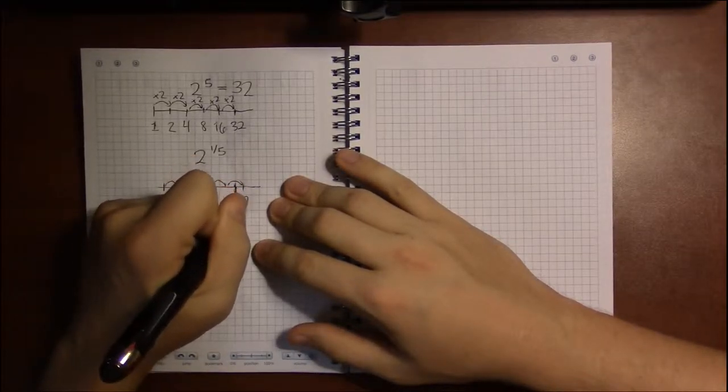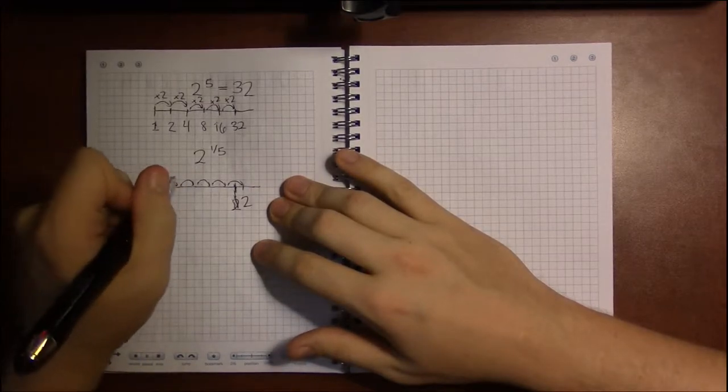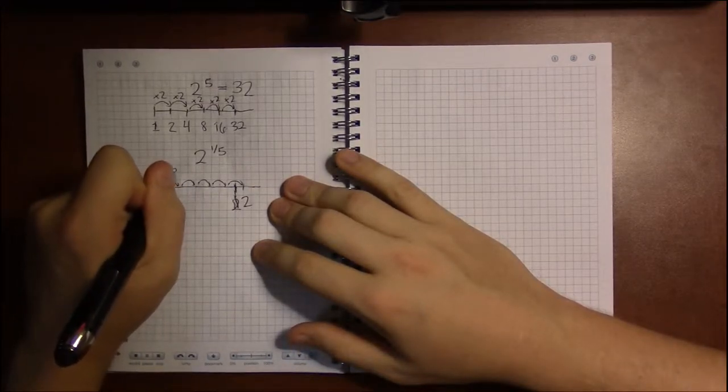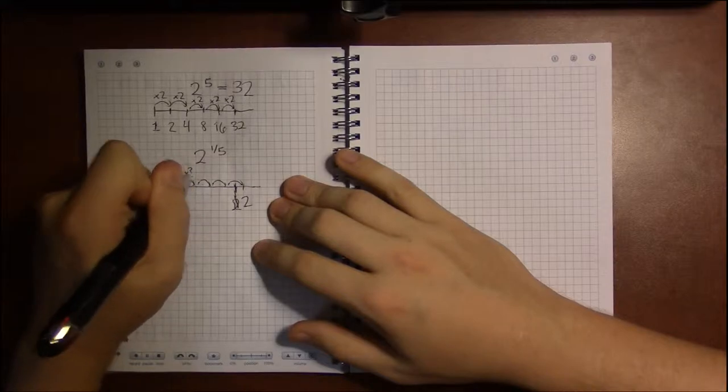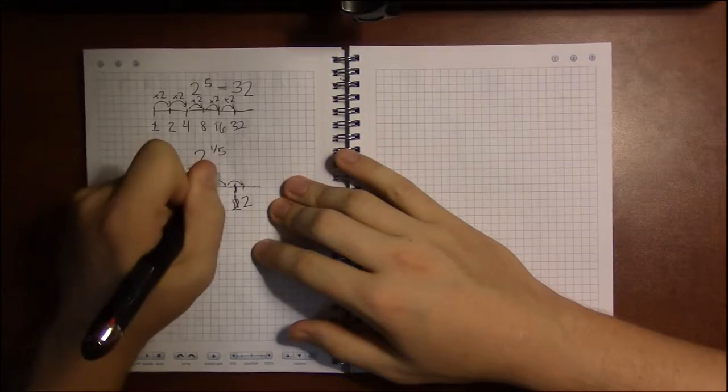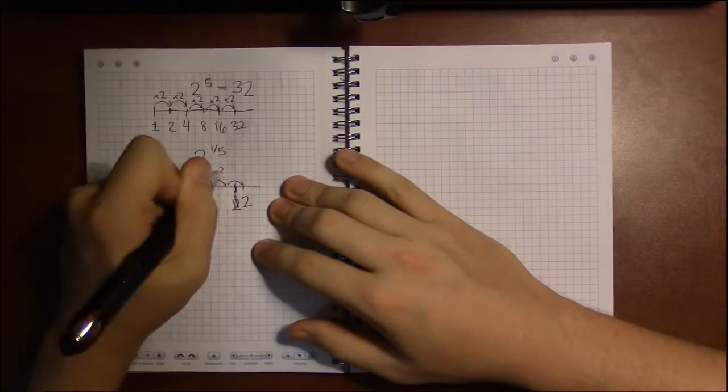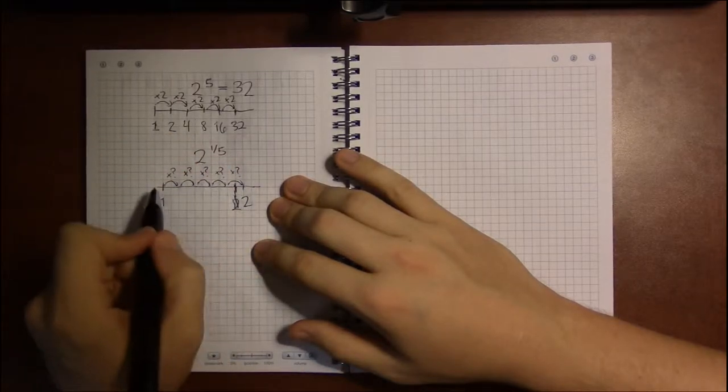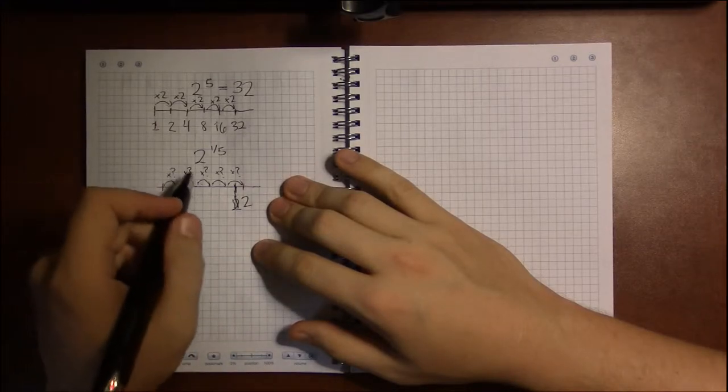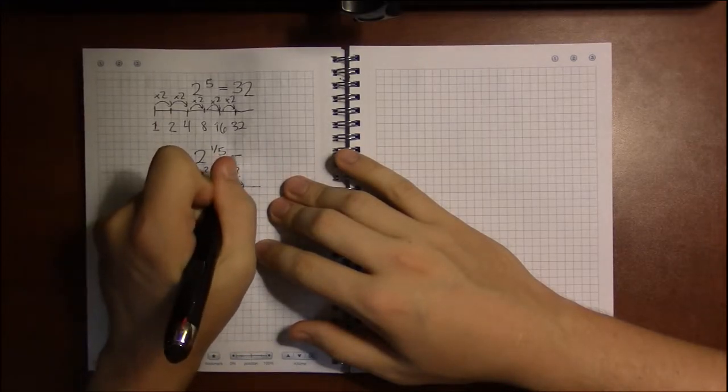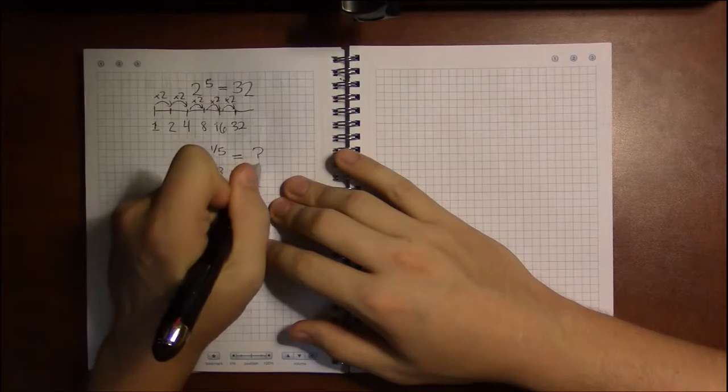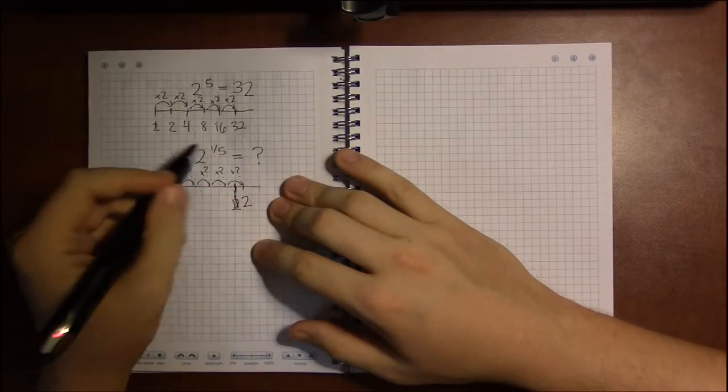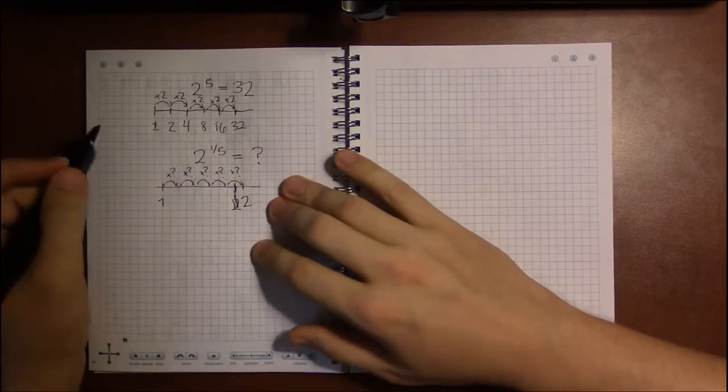This is what you get for not planning and doing these all live. Now, what do we have to multiply by to reach 2 in 5 of these times-ish steps? And whatever this was, this was our answer to the 5th root of 2, or 2 to the 1/5th.